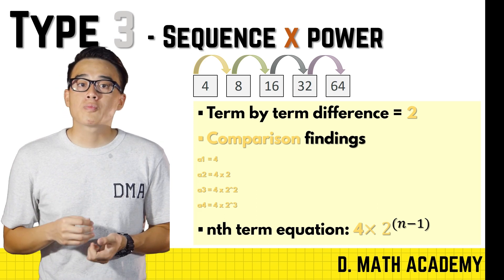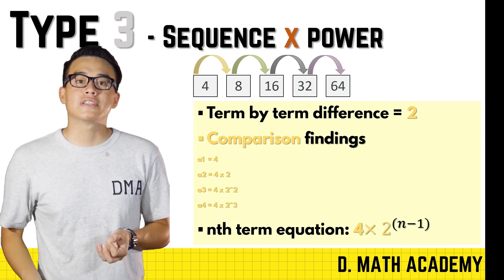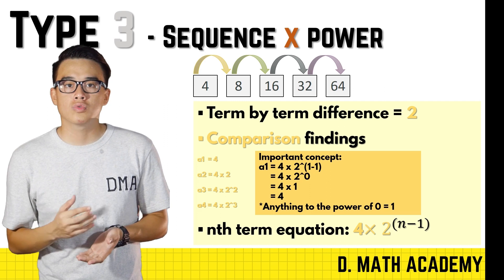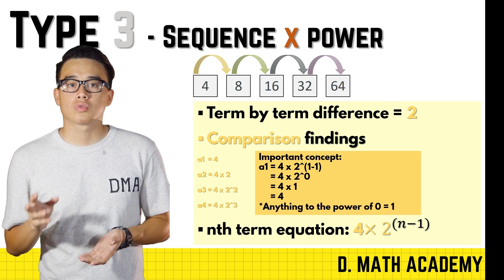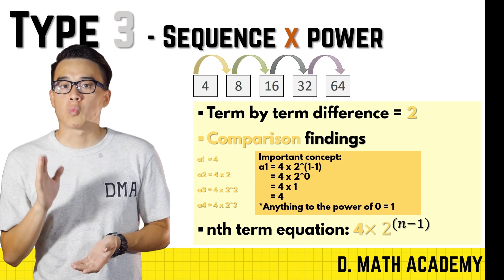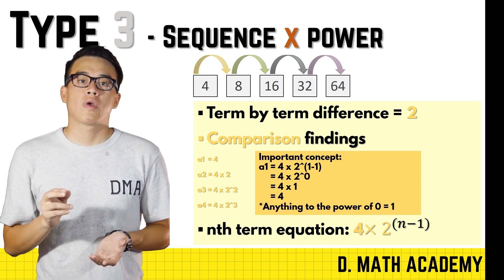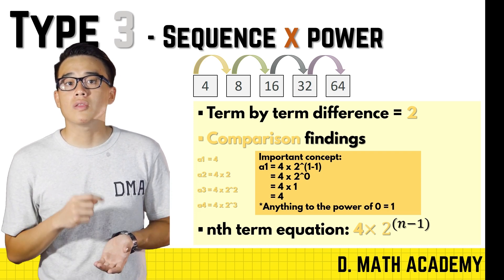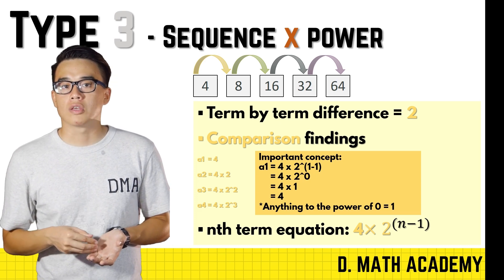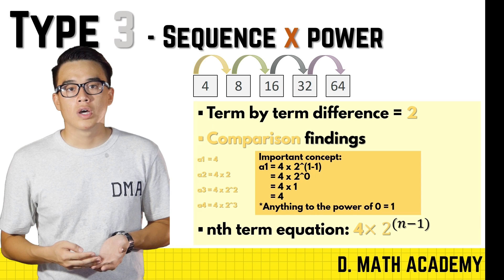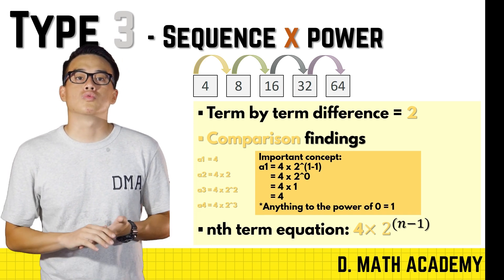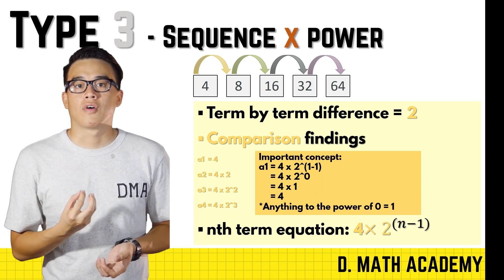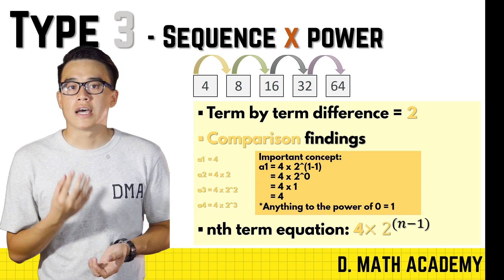To prove this, take a1 as an example: 4 times 2 to the power of (1 minus 1), which is 4 times 2 to the power of 0. Anything to the power of 0 equals 1, so 4 times 1 gives the final answer of 4. Always check for the differences first, then identify the relationship, and you'll be able to construct the n-term.